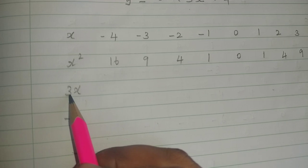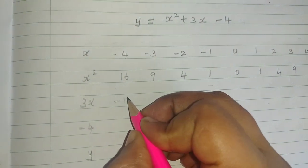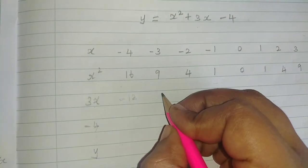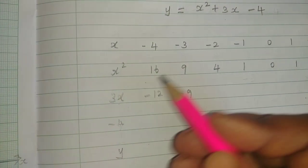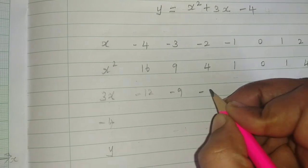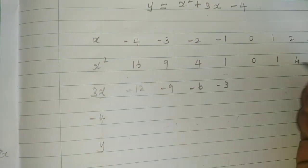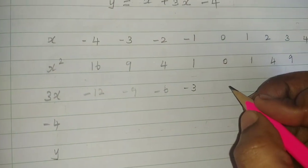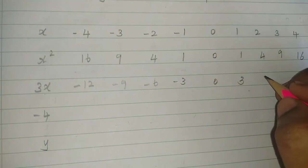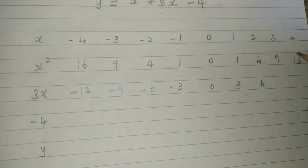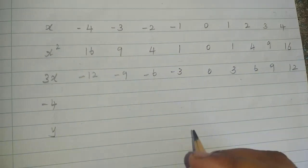Next, 3x values. 3 times 4 is 12, so minus 12. 3 times 3 is 9, so minus 9. 3 times 2 is 6, so minus 6. 3 times 1 is 3, so minus 3. 3 times 0 is 0. 3 times 1 is 3. 3 times 2 is 6. 3 times 3 is 9. 3 times 4 is 12.